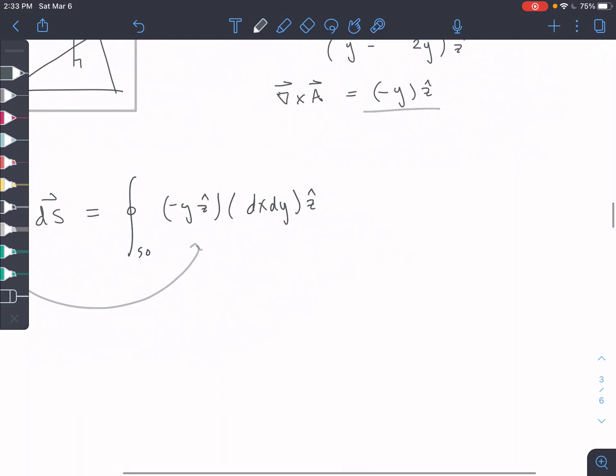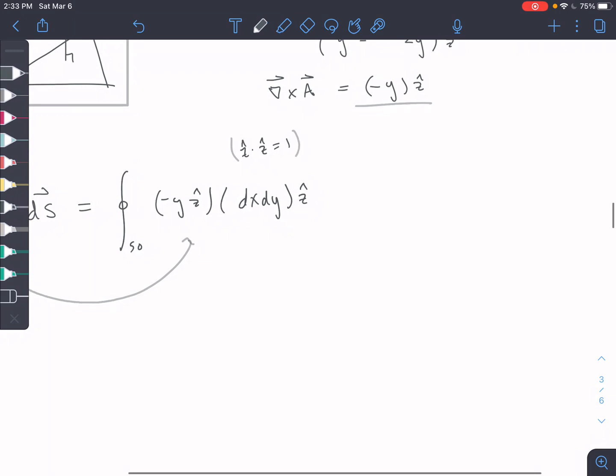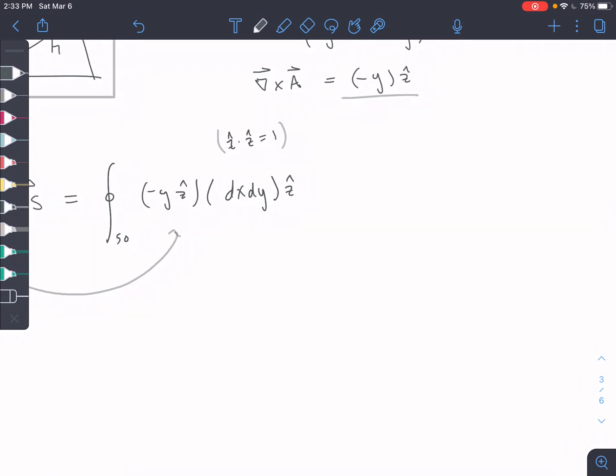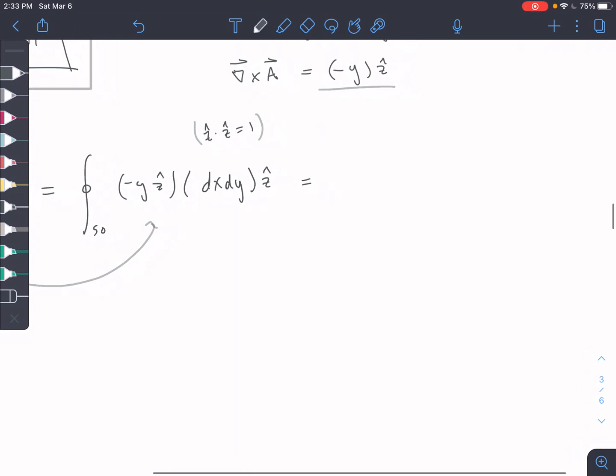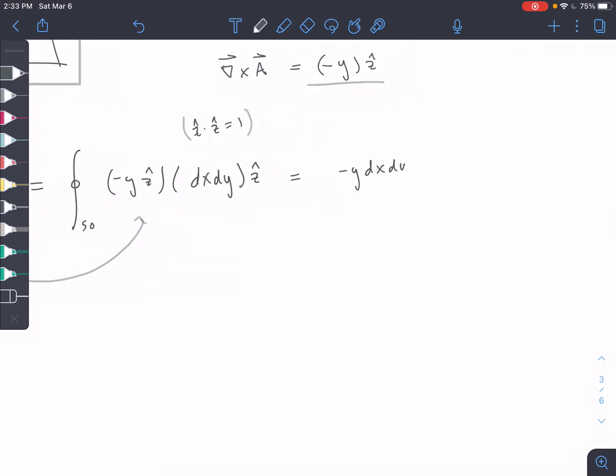So Z-hat dot Z-hat equals one. So these directional unit vectors dotted with themselves is equal to one. And then like Z-hat dot Y-hat equals zero. If they're perpendicular and you dot them, it's equal to zero. So negative Y, DX, DY.